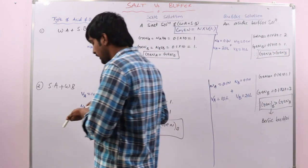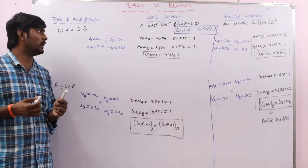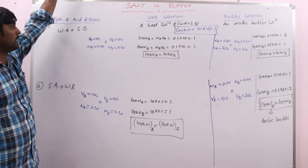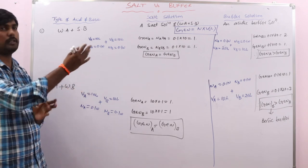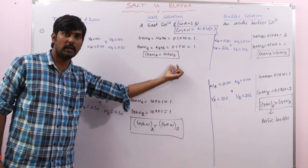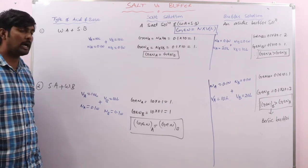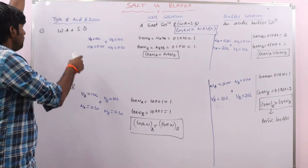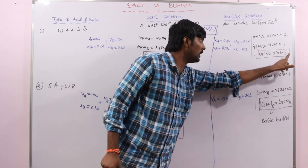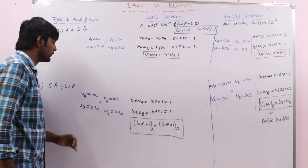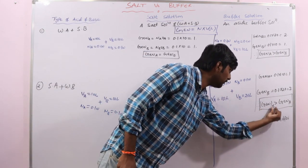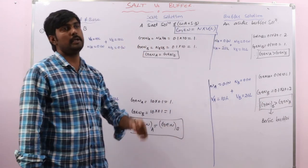In this way, we can easily identify whether the given solution is a salt solution or a buffer solution. Remember this formula and compare the equivalences of acid and base. If equivalence of acid equals equivalence of base, we get a salt solution. When mixing weak acid plus strong base, if equivalence of weak acid is greater than equivalence of strong base, an acidic buffer is formed. When mixing strong acid with weak base, if equivalence of weak base is greater than equivalence of strong acid, a basic buffer is formed.